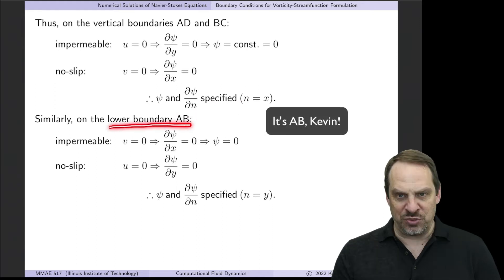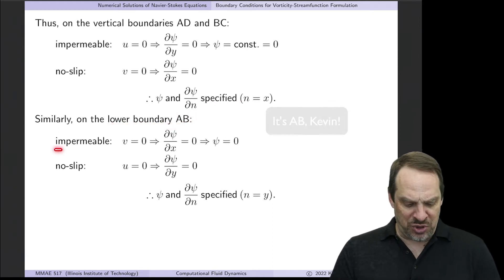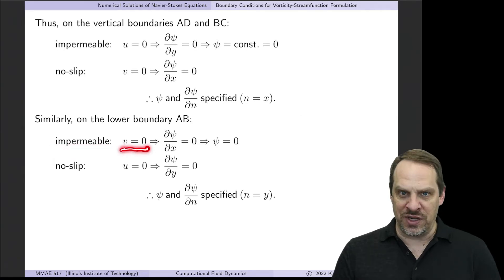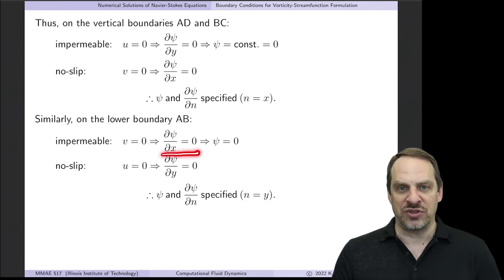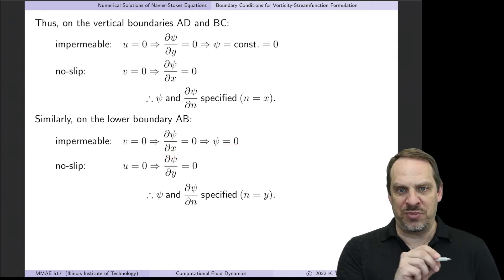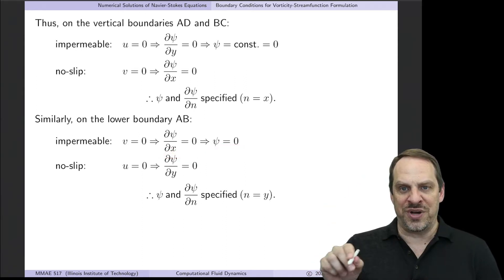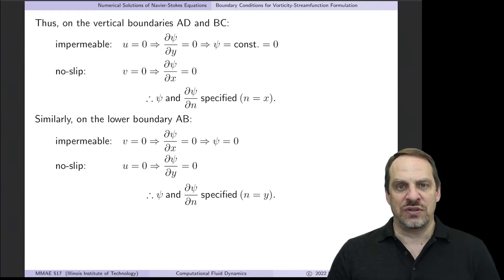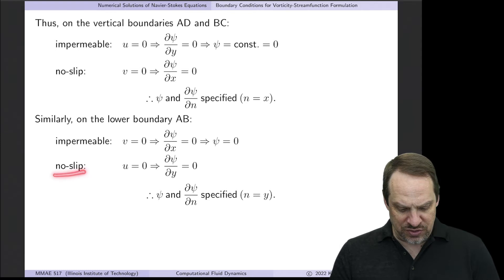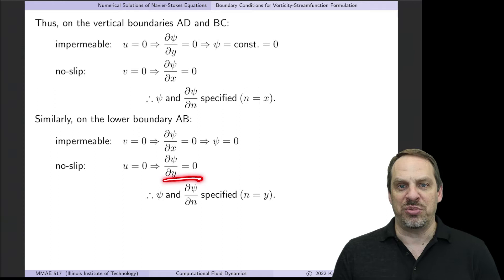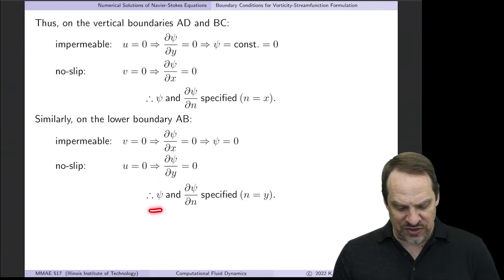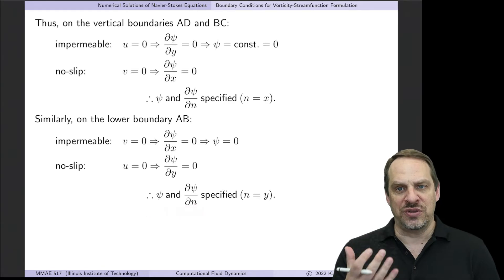Similarly for the lower boundary BC along the bottom of the driven cavity: impermeability requires that the normal velocity, now v, be zero. Since v is −∂ψ/∂x, ∂ψ/∂x equals zero, so ψ is again zero along that boundary. Along the two vertical boundaries and the bottom boundary, the value of the stream function is zero — a Dirichlet condition. The no-slip condition means the tangential velocity u is zero, requiring ∂ψ/∂y to be zero. So again, both ψ and its normal derivative are specified on these fixed boundaries.